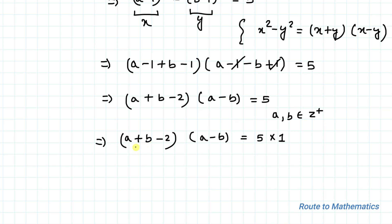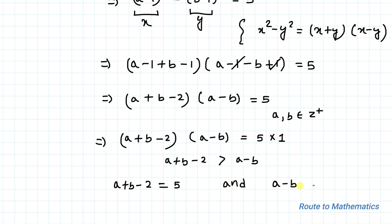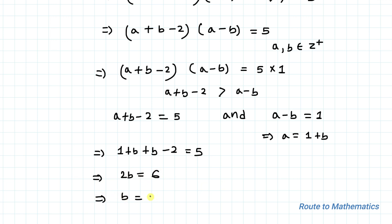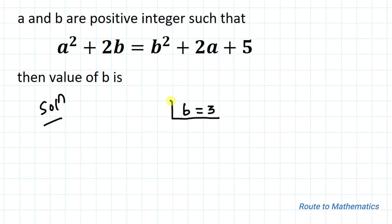Since a and b are positive integers, we can assume that a + b - 2 must be greater than a - b. This implies a + b - 2 = 5 and a - b = 1. So a = 1 + b. Substituting the value of a, we have 1 + b + b - 2 = 5, which implies 2b = 6, and therefore b = 3.